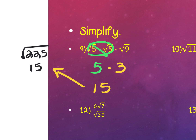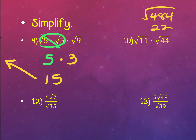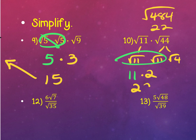For number 10, don't multiply 11 times 44 — that gives square root of 484, which is hard to recognize without a calculator. Instead, factor: 44 is 11 times 4. Notice a pair of 11s — that comes out. And the square root of 4 is 2. Multiply: 22.